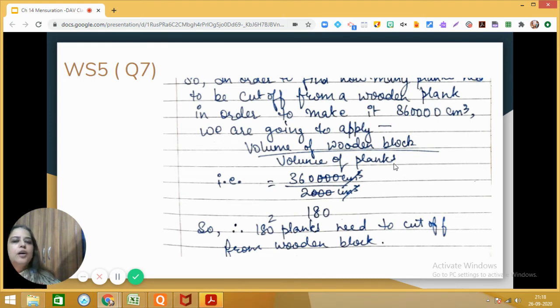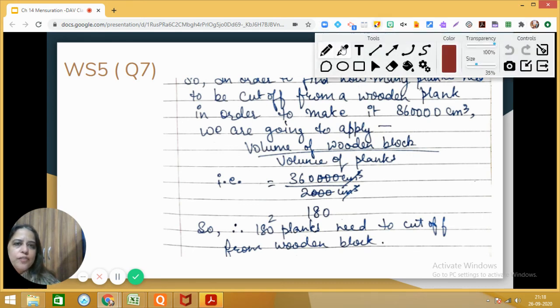So what is the volume of the wooden block divided by the volume of one plank? Volume of one plank is 2000, so we will be doing this calculation.